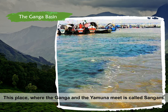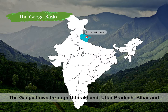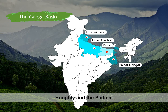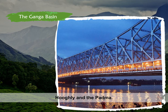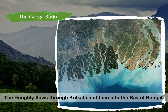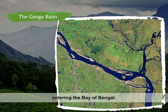This place where the Ganga and the Yamuna meet is called Sangam. The Ganga flows through Uttarakhand, Uttar Pradesh, Bihar, and when it reaches West Bengal, it divides into two branches — the Hooghly and the Padma. The Hooghly flows through Kolkata and then into the Bay of Bengal. The Padma enters Bangladesh and joins the Brahmaputra River before entering the Bay of Bengal.